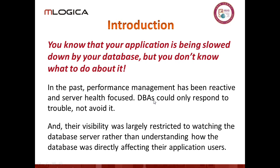Very frequently you'll end up getting telephone calls from end users who say things are slow, and when they do that, it's hard to quantify. You really don't know if it's slower than it was yesterday, if the user's been drinking too much coffee, if the application is slowing down because there are other things going on on the server. Frequently they don't call when things are slowing down — they call in the afternoon and say, hey, things were slow this morning. Can you figure it out?